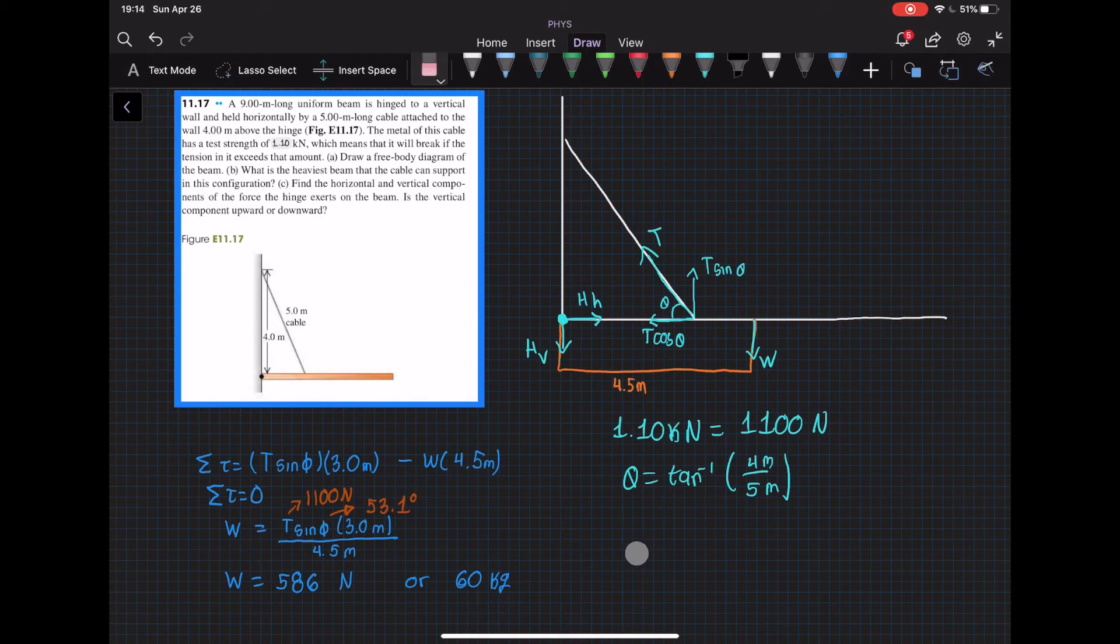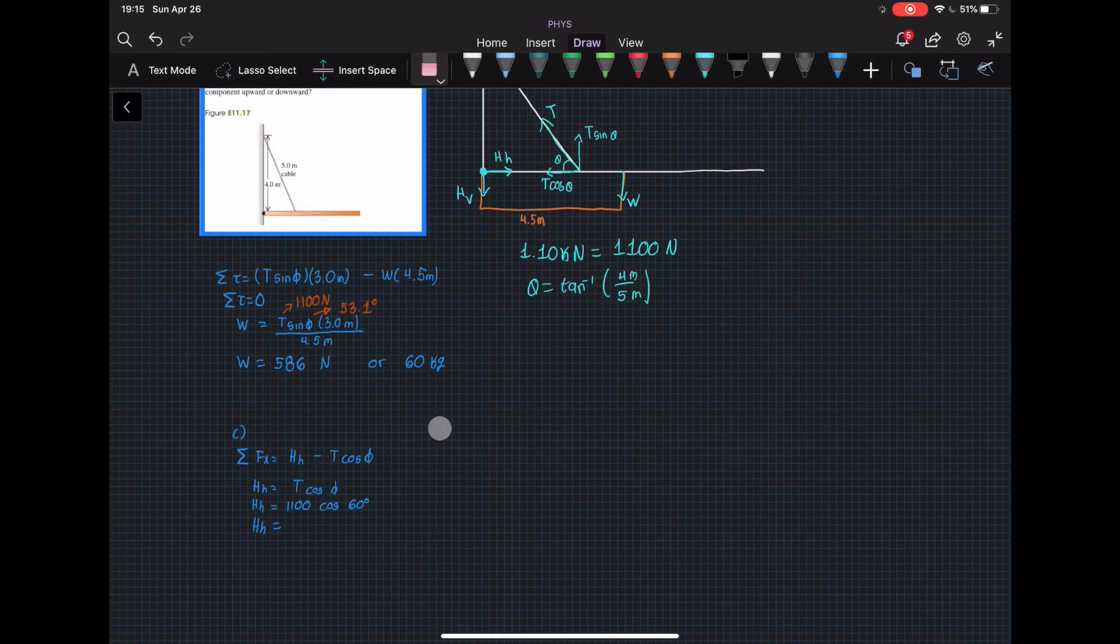Now for part C, it's asking for the horizontal and vertical component of the force the hinge exerts on the beam. For the horizontal component, we're gonna use the sum of the forces in the x-direction which is the hinge horizontal minus T cosine of theta. And the sum of the force in the x-direction should be 0.